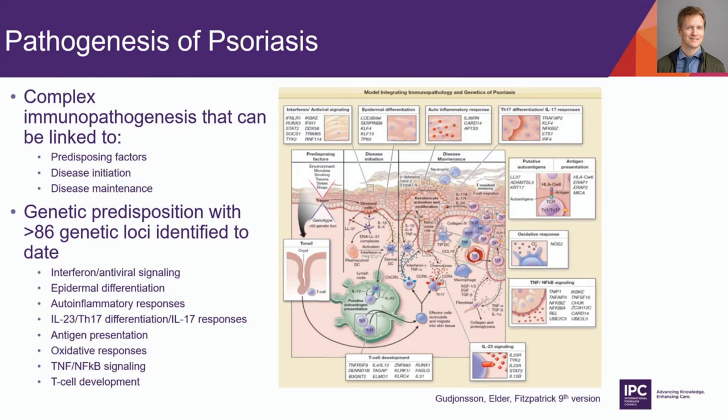If you look at the genetic predisposition, the 86 genetic loci identified today align into specific biological processes including interferon antiviral signaling, epidermal differentiation, auto-inflammatory responses, Th17 differentiation and IL-17 responses, antigen processing and presentation, oxidative responses, TNF and NF-κB signaling, IL-23 signaling, and T-cell development. You can appreciate the diversity of biological processes involved — central inflammatory pathways like IL-17 and IL-23 signaling, but also multiple cell types and tissues, making it truly a multi-cellular disease process.